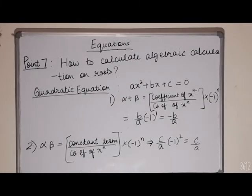Our next point is how to calculate algebraic calculations on roots of quadratic and cubic equations. Consider the equation given below as f(x) equals ax square plus bx plus c equals 0. Assume the roots are alpha and beta. Then alpha plus beta equals minus b by a, which is the coefficient of x upon coefficient of x square. The second relation is alpha beta equals c by a, the constant term upon coefficient of x square.